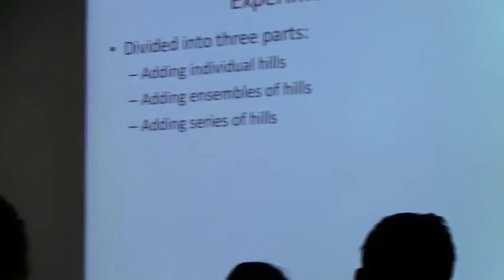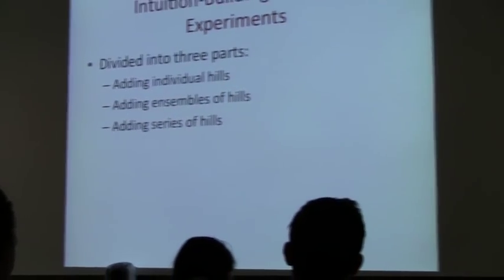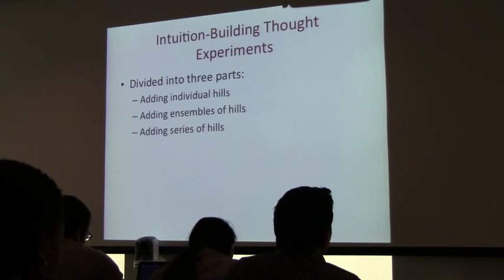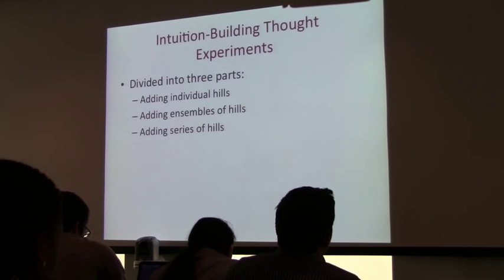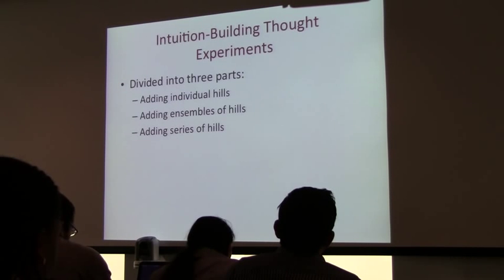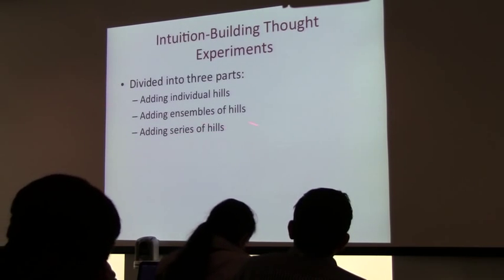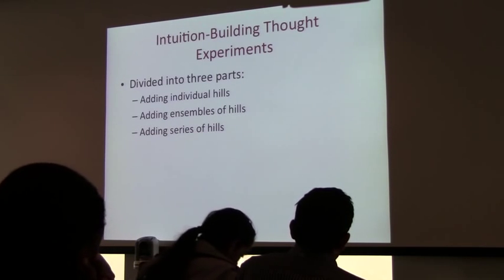Now I'll go into thought experiments. These will be about how to choose parameters and what the method is doing. We'll divide into three parts: first, adding a single hill — looking very closely at what happens when you add a hill and how it affects the system; next, adding an ensemble of hills — if we could add all hills at once, what would happen, how would we want to add those; and finally, adding them staggered in series, because there are a few non-obvious artifacts you might notice.